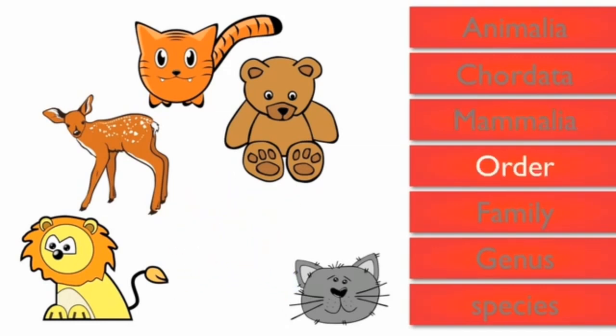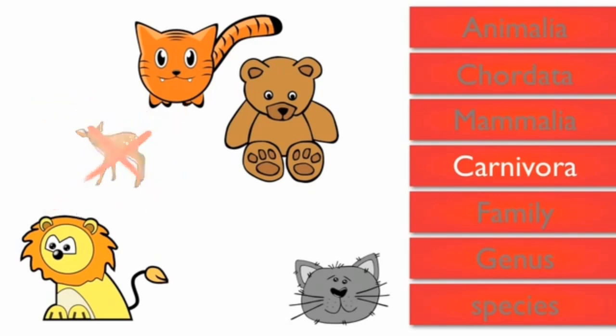The next level is order. The order of the lion is carnivora, it means the animal that eat meat, so the deer is eliminated.